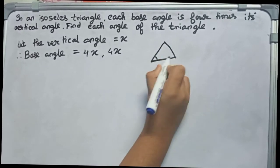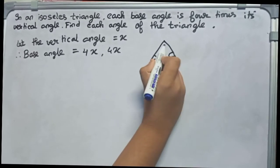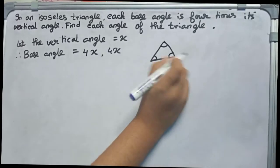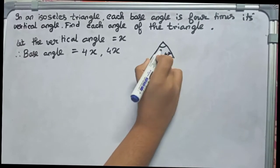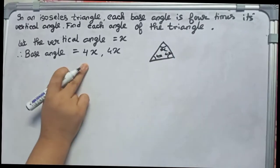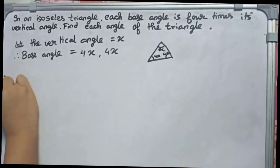If we draw a rough diagram, this side and this side are our base angles, and this side is our vertical angle. We have taken this side 4x, this side 4x, and the upper side is x. So there are two base angles.